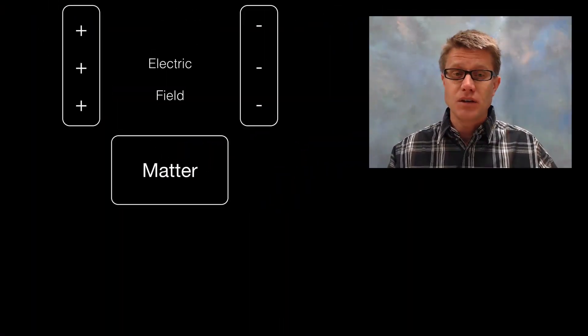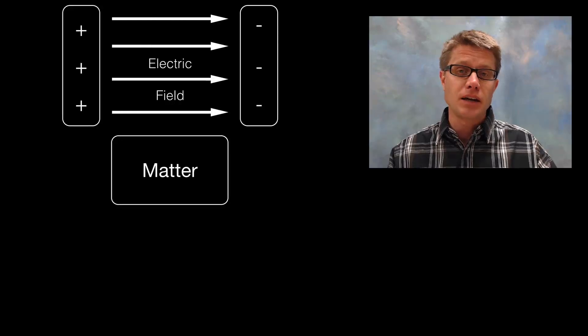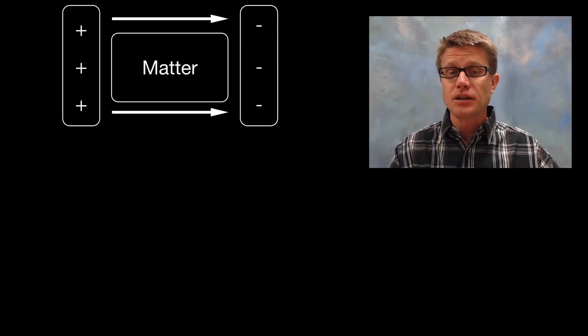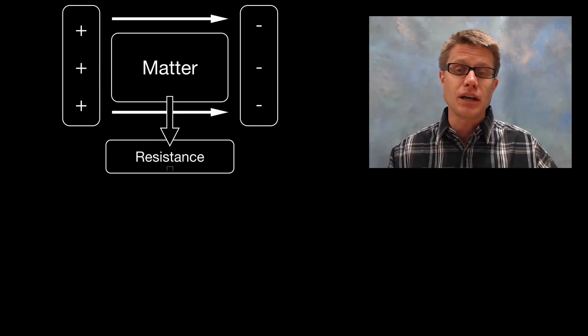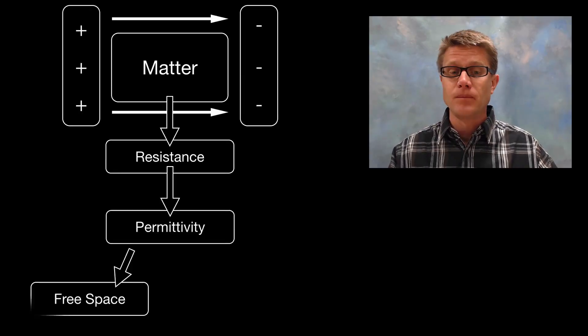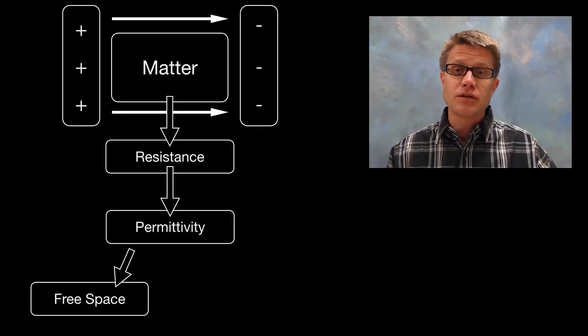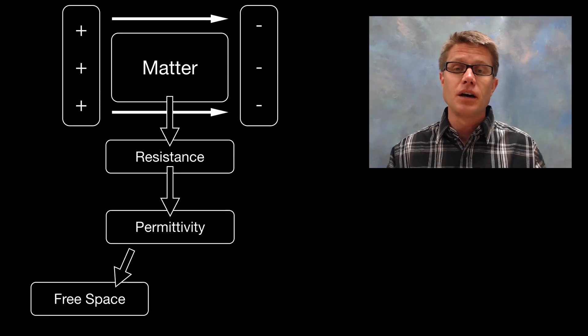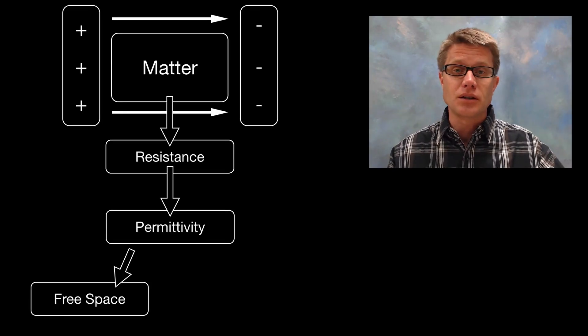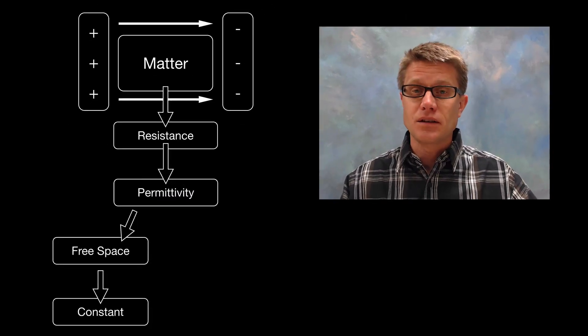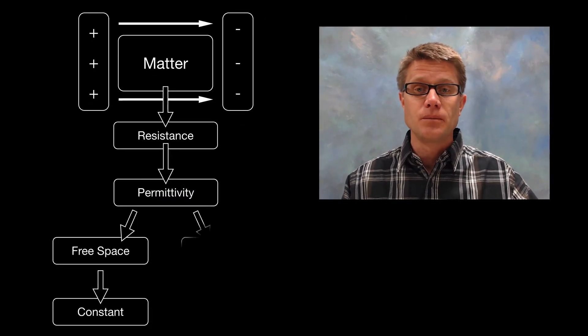What is permittivity? If you have an electric field like this, matter has an ability to resist that electric field. That resistance to an electric field is called its permittivity. The permittivity of free space would be the resistance offered by just a vacuum between those two conducting plates. That's a constant value that we can compare other materials to.